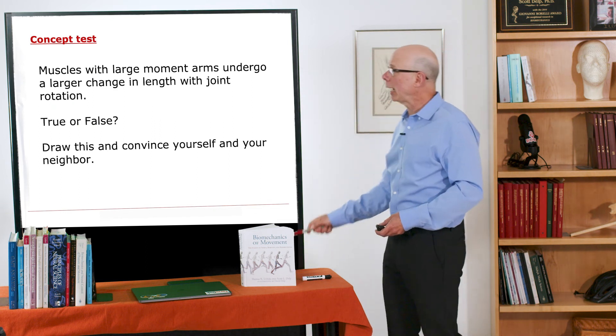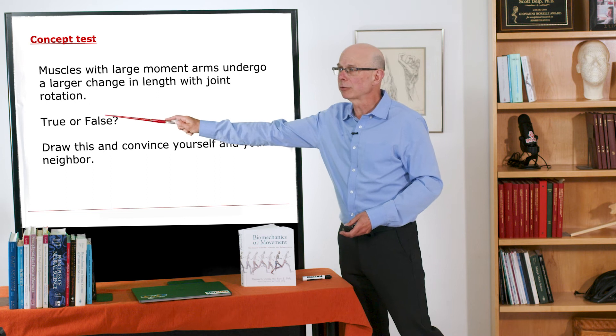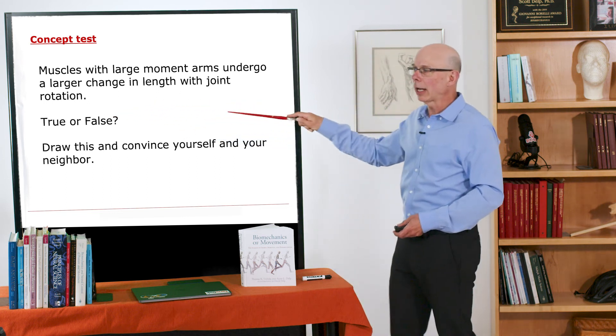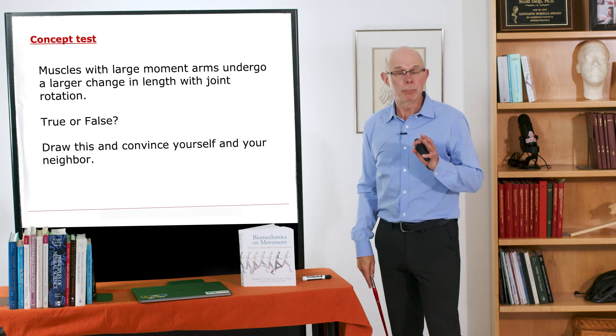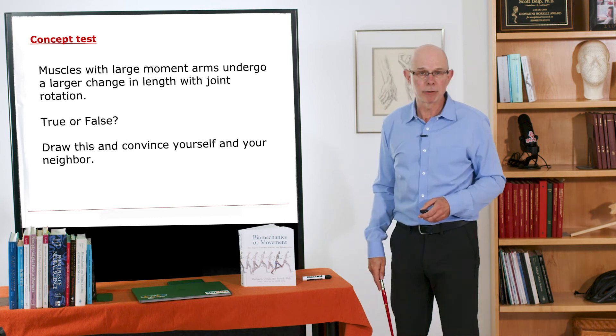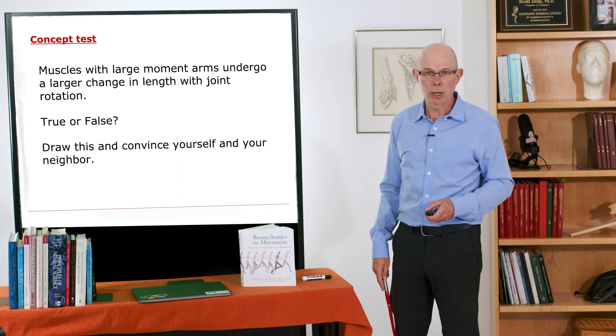Now we can just differentiate these curves here, these length curves, remember the dL/dθ, and get curves for moment arms. We could compare the computer model with our experimental measurements to gain confidence in the computer model.